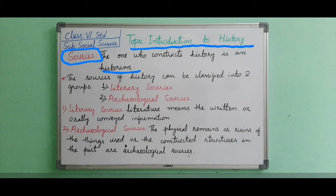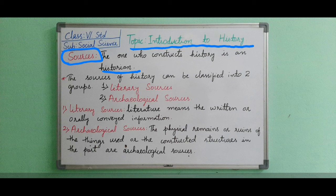Historians use historical evidences to be particular and authentic about history. Whatever sources they are using, authenticity and accuracy will be there. It is believed that there cannot be history without sources. Sources are the basic material needed for the construction of history — whenever we are doing anything, we first want some material, and that material is called sources.